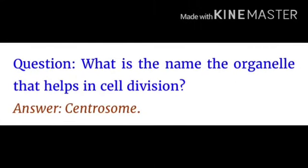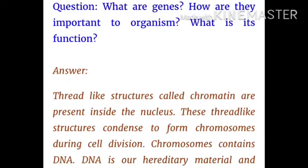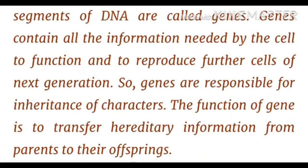What is the name of the organelle that helps in cell division? The answer is centrosome. What are genes? How are they important to an organism? Thread-like structures called chromatins are present inside the nucleus. These condense to form chromosomes during cell division. Chromosomes contain DNA, which is our hereditary material, and segments of DNA are called genes. Genes contain all the information needed by the cell to function and to reproduce for the next generation, so genes are responsible for inheritance of characters.